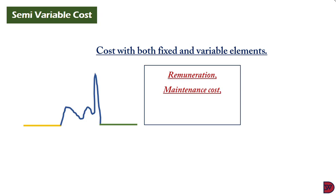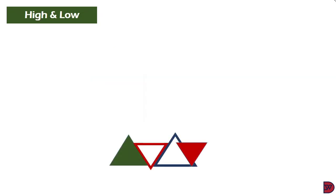A telephone expense is another example of a semi-variable cost. It normally has a flat rate incurred for the period as long as you subscribe to the telephone company's service — a cost you pay irrespective of whether you use it or not. Additional charges then apply for extra usage. There are other examples, but we're limited to these three.